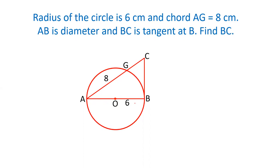a diameter AB is given, and from point A there is a chord AG drawn of 8 cm. From B there is a tangent BC drawn, and the chord and tangent meet at point C. We have to calculate the length of BC.